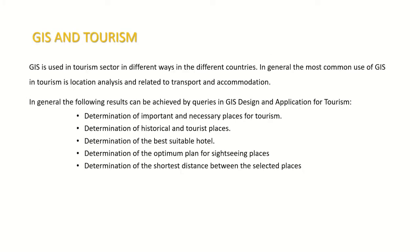GIS is used in the tourism sector in different ways across countries. The most common use is location analysis related to transport and accommodation. Queries in GIS design and application for tourism can achieve: determination of important and necessary tourist places, historical and tourist place identification, determination of the best suitable hotel, determination of the optimum sightseeing plan, and shortest distance between selected places.